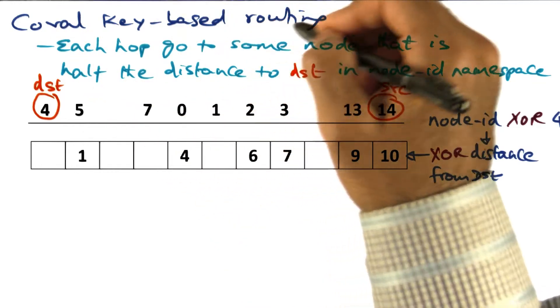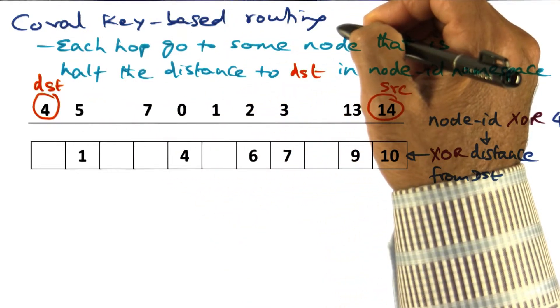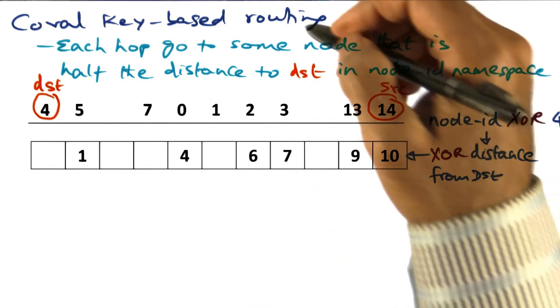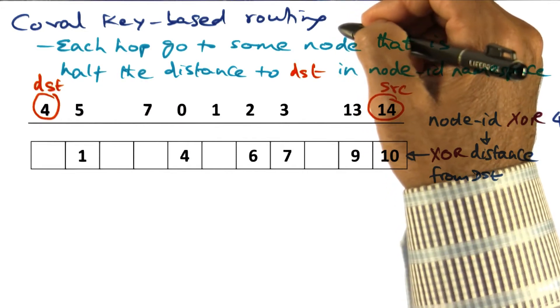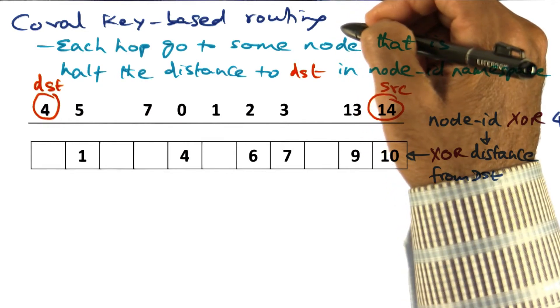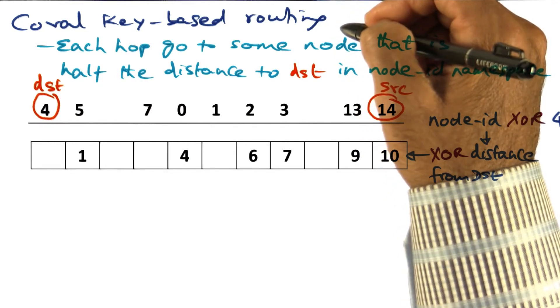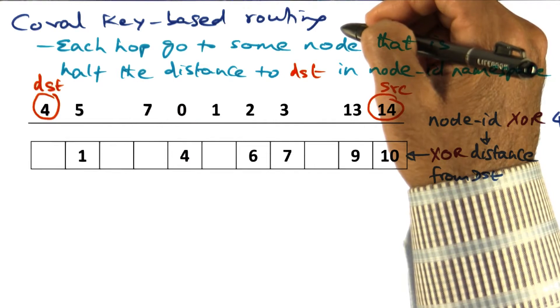The Coral key-based routing takes a different approach. Rather than being greedy, we are going to slowly progress towards our desired destination.